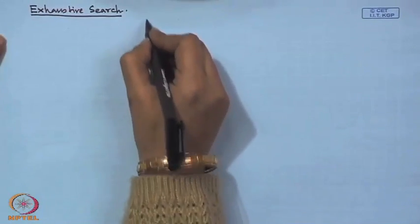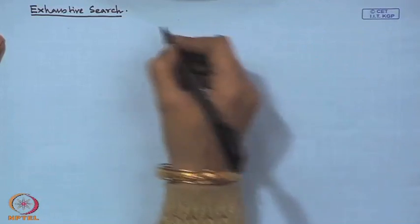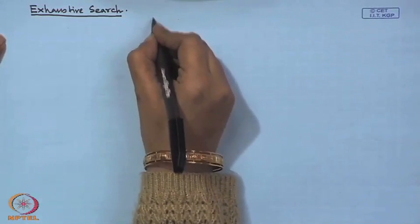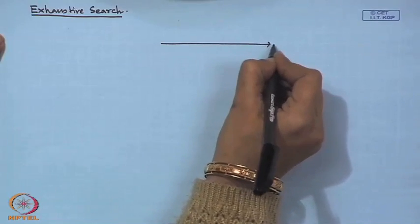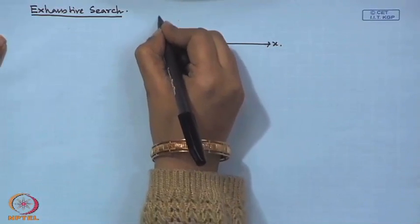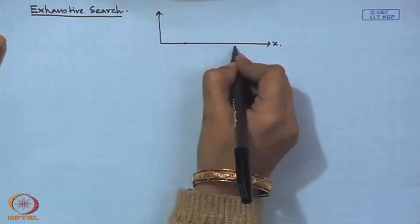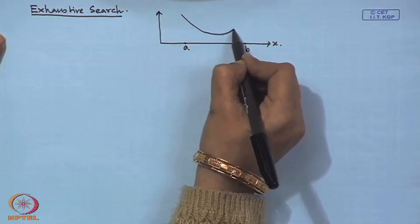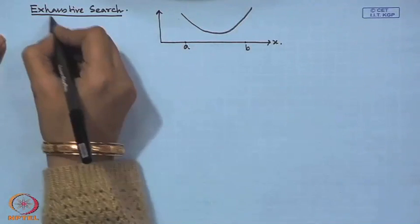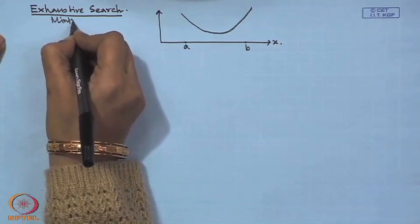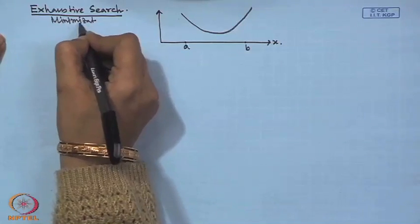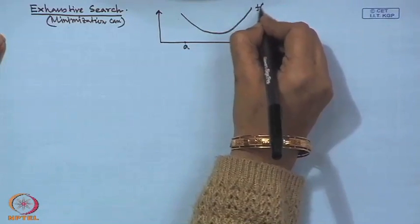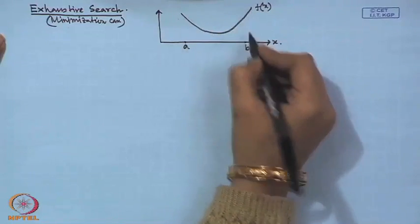The first assumption for applying the exhaustive search technique is that the function must be unimodal in the given domain of definition. If the x-axis represents the decision variable and the y-axis the objective function, within the domain from a to b the function is unimodal. Let us discuss the method for the minimization problem; the same logic can be reversed for the maximization problem. The function f(x) is unimodal, meaning there is only one minimum in between.